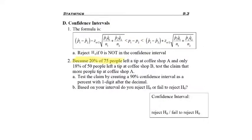Here is a problem: Because 20% of 75 students left a tip at coffee shop A, and only 18% of 50 people left a tip at coffee shop B, test the claim that more people tip at coffee shop A.